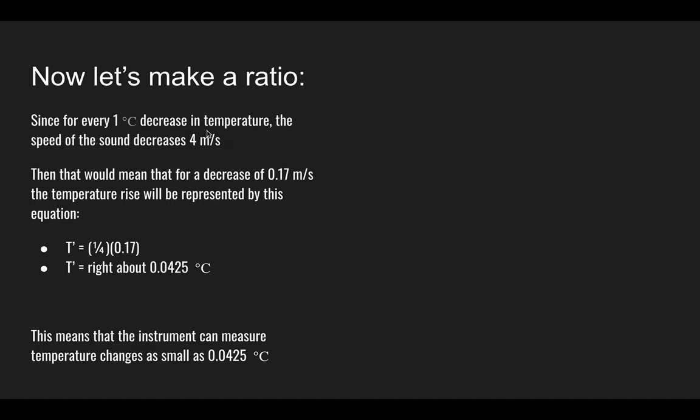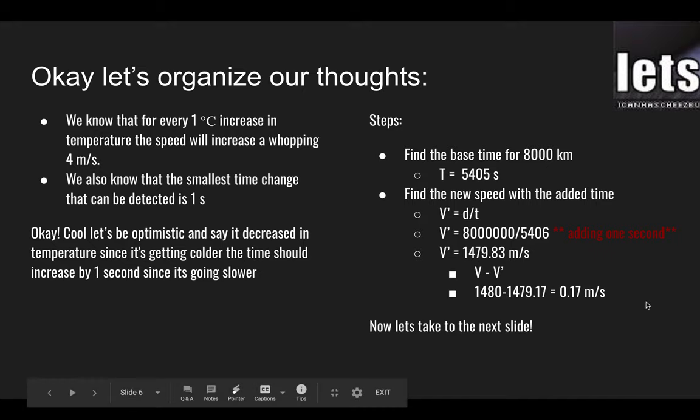It's asking us for the smallest change in temperature. So we need Celsius. We need to get rid of the meters per second somehow. So we set up this equation: T prime equals the ratio we set up before, 1 over 4, and we're multiplying that by our change in velocity, which is 0.17, which we found earlier in this slide.